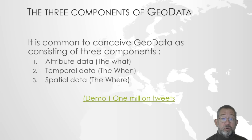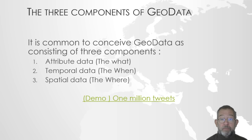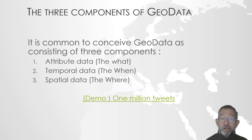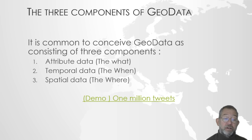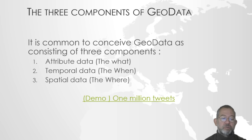It is common to talk about GeoData as being comprised of three components: the attribute data — the what, such as what soil type, what land cover type, what street name; the temporal data — the when, such as when was the street built or when was the state registered; and the spatial data — the where, which is of course the most important and interesting part. So, where is the street, or where is this postal district.